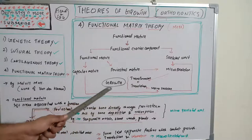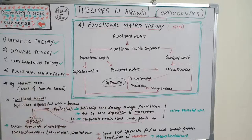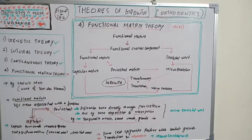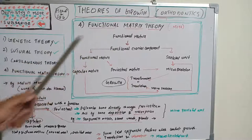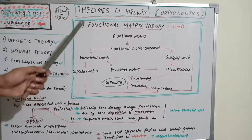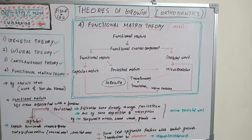Transformation — bone deposition and resorption — and translation — volumetric positional change — ultimately result in growth. The totality of soft tissues associated with a single function is termed a functional matrix. There are two distinct types: periosteal matrices and capsular matrices.